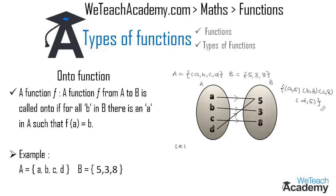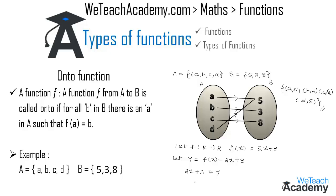Now let us consider another example. Let f be a function from R to R where f(x) = 2x + 3. First, let us consider y = f(x), so 2x + 3 = y. Transferring 3 and 2 to the other side, we get x = (y − 3) / 2.